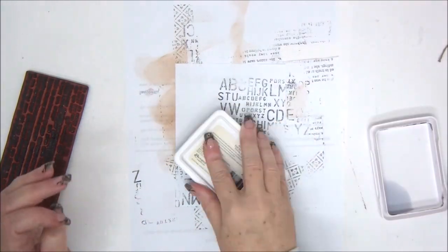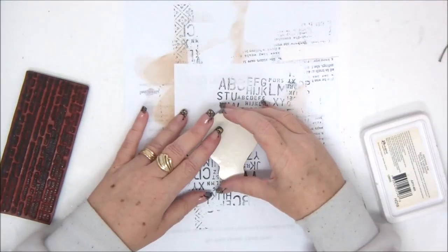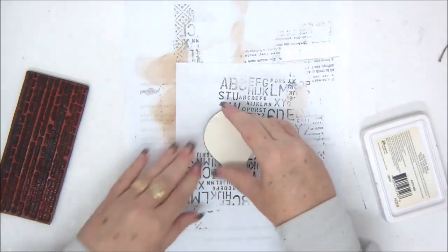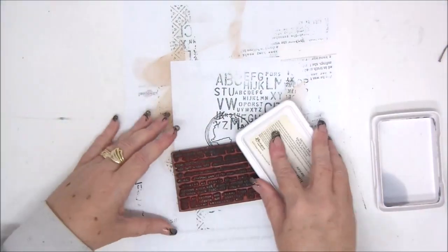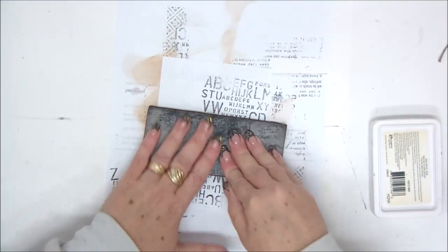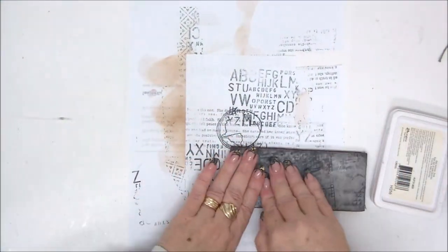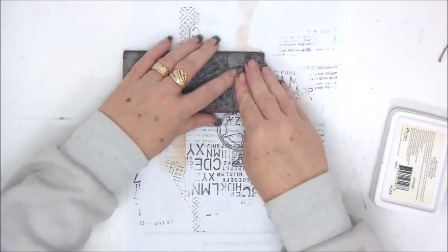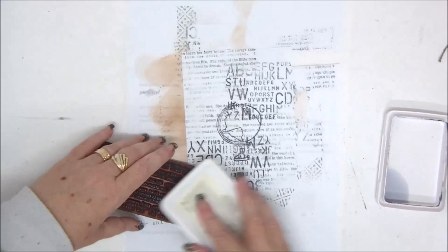So I'm using three different stamps: letters, large letters, a hot air balloon, and sort of a newspaper type of text as the background. So once I have finished stamping on the entire paper, I want to cover it completely. I don't want any white space remaining.